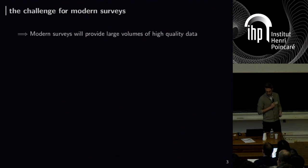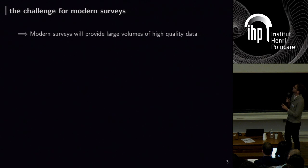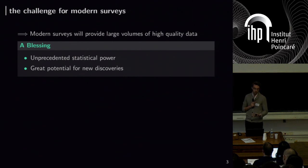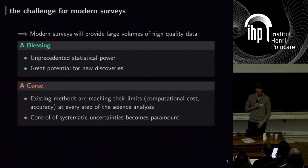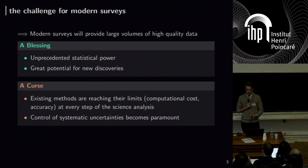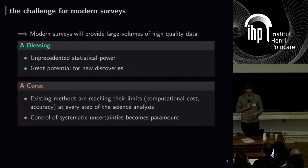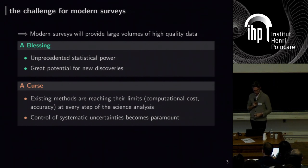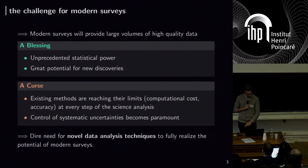I mention all of this to highlight that modern surveys will give us a huge amount of high-quality data. On one hand it's really a blessing, because it means we'll have unprecedented statistical power and great potential for new discoveries. But when you look at the details — and those of you implementing current surveys know this well — it can also be a curse. All of the methods developed over the last decades start to fail one after the other when applied at this scale and complexity. Control of systematic uncertainties is paramount, and that's the main challenge going forward.